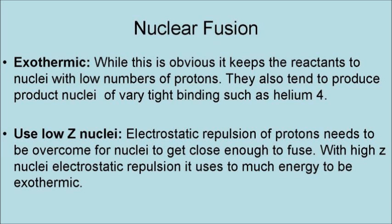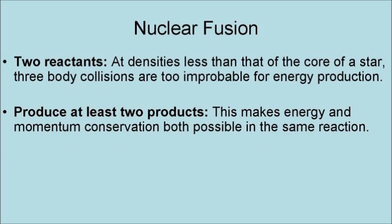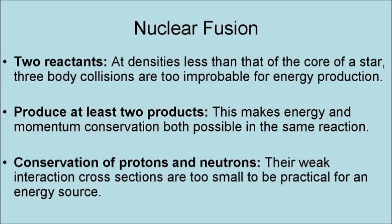They have to use low Z-nuclides, that is, nuclei with low numbers of protons. This is because electrostatic repulsion of protons needs to be overcome for nuclei to get close enough to fuse. With high Z-nuclides, electrostatic repulsion uses too much energy to be exothermic. They must have exactly two reactants, because at densities less than that of the core of a star, three-body collisions are too improbable for energy production. They must produce at least two products. This makes energy and momentum conservation both possible in the same reaction. It also requires conservation of protons and neutrons, as their weak interaction cross-sections are simply too small to be practical for an energy source.